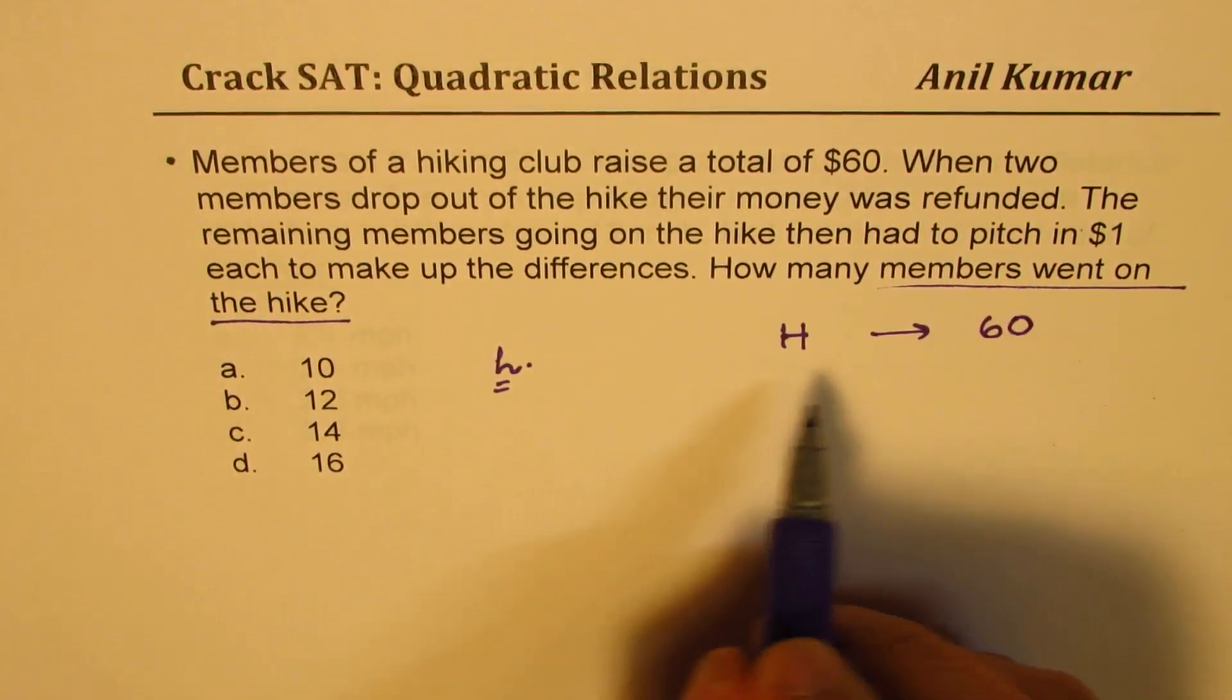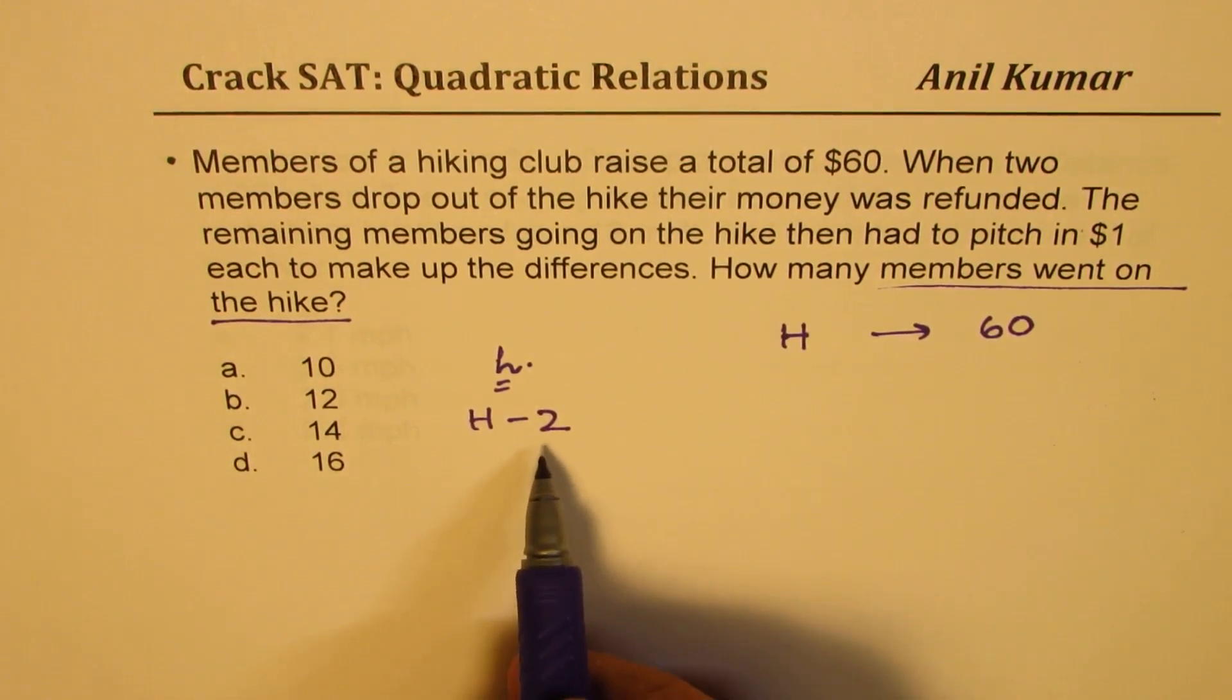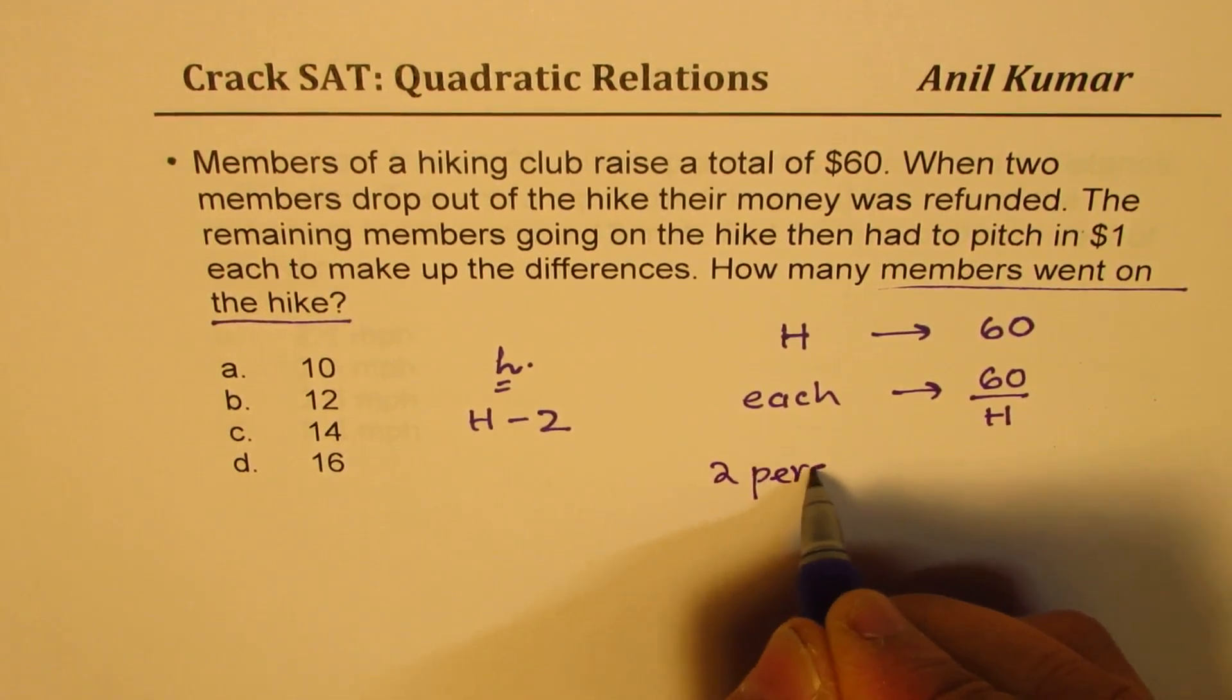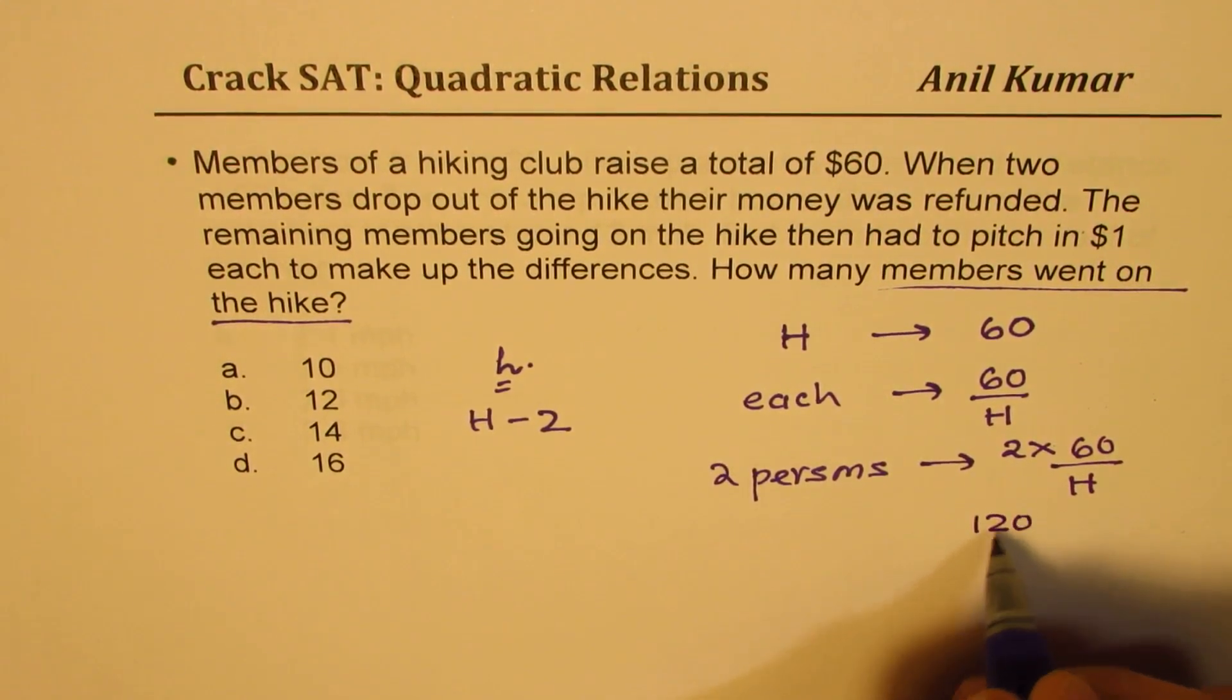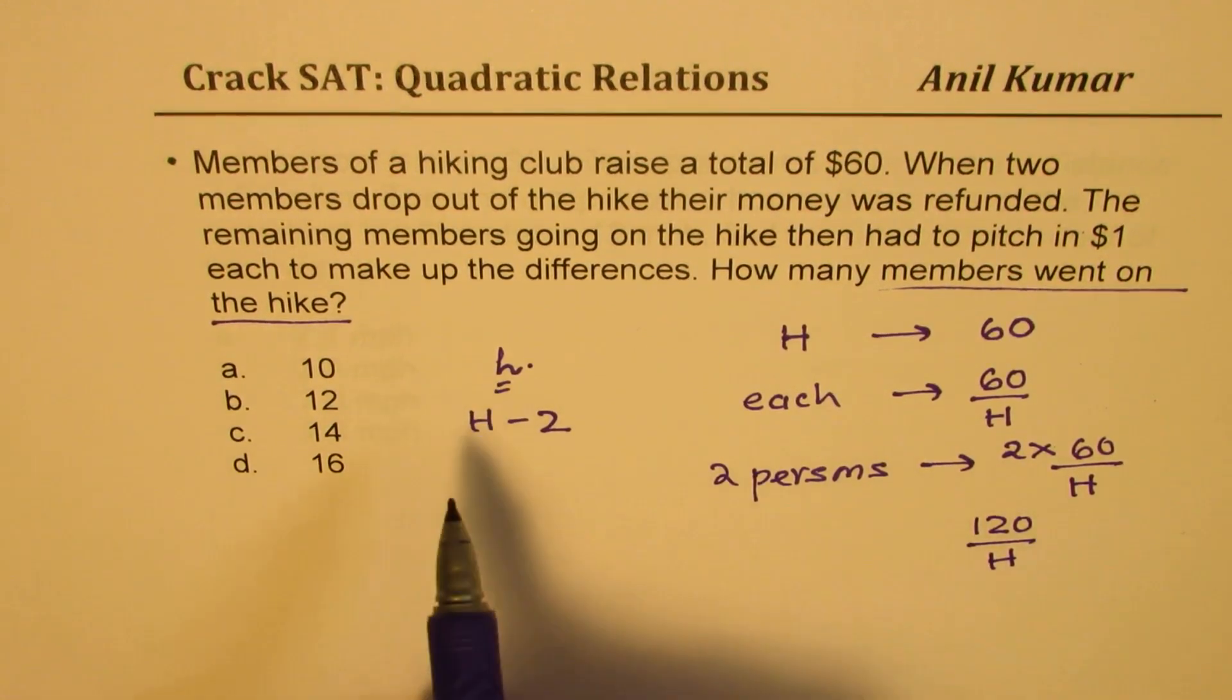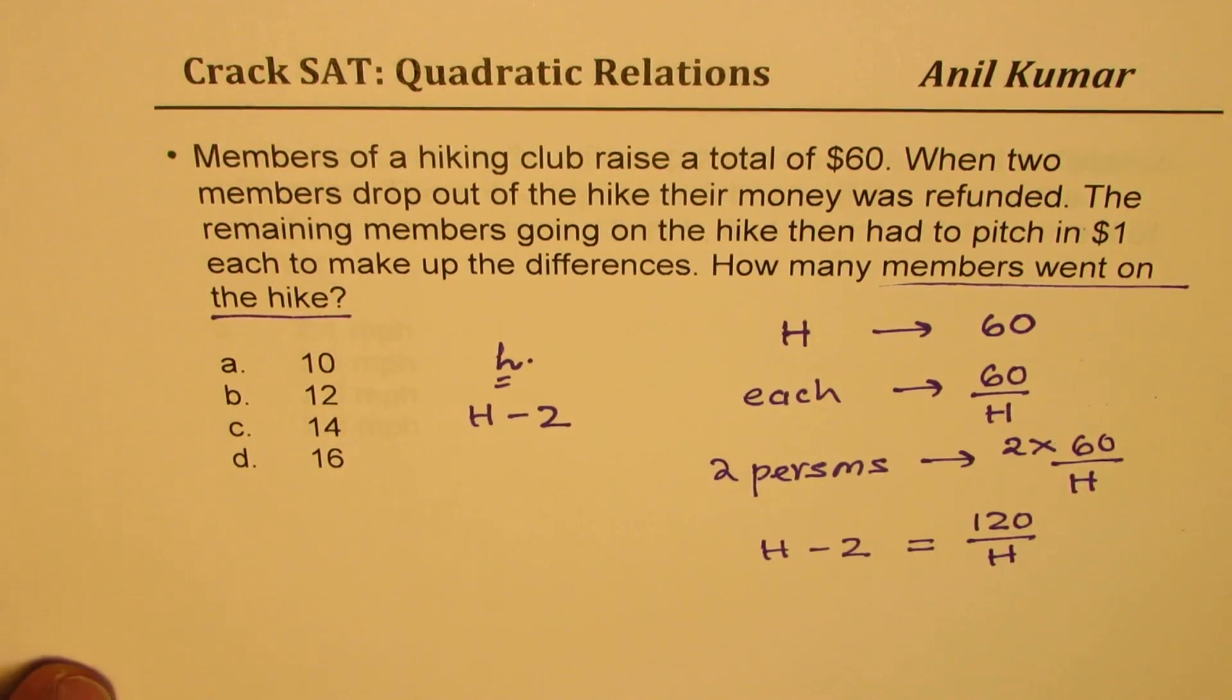So initially, let us say capital H is the number of members who raised 60 dollars. Now this lowercase h is H minus 2 since two were dropped out and their money was returned. So if they are equally contributing, then each person contributes 60 over H. So two persons will contribute two times 60 over H, that is 120 over H. So that is the contribution. Now this contribution has been compensated by one dollar paid by lowercase h, which is capital H minus 2. So that should be equal to H minus 2. That is what we are trying to figure out.